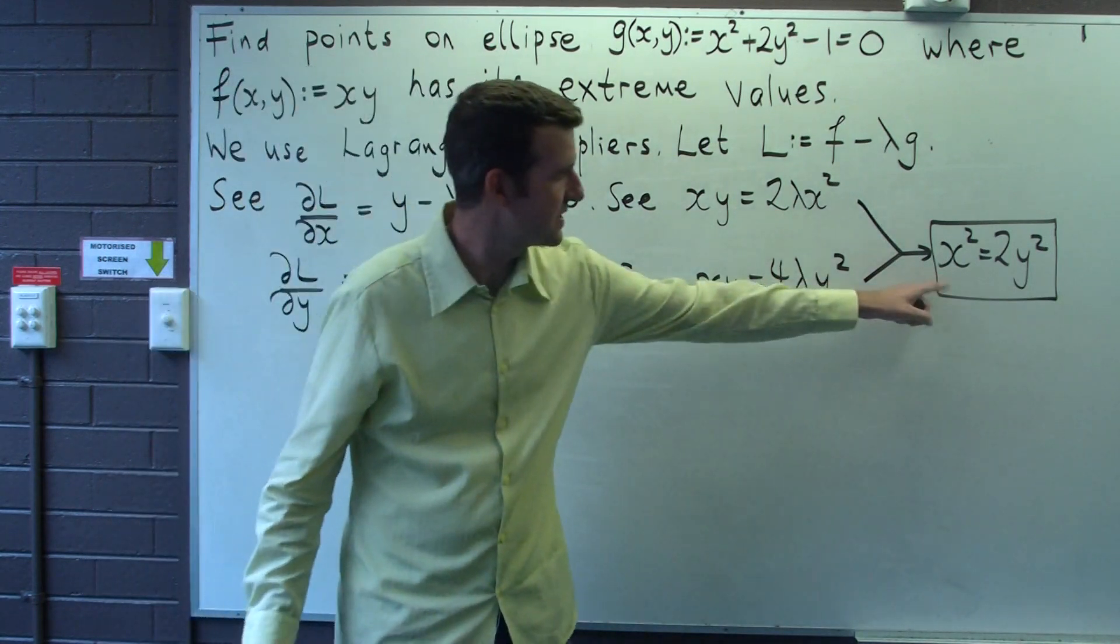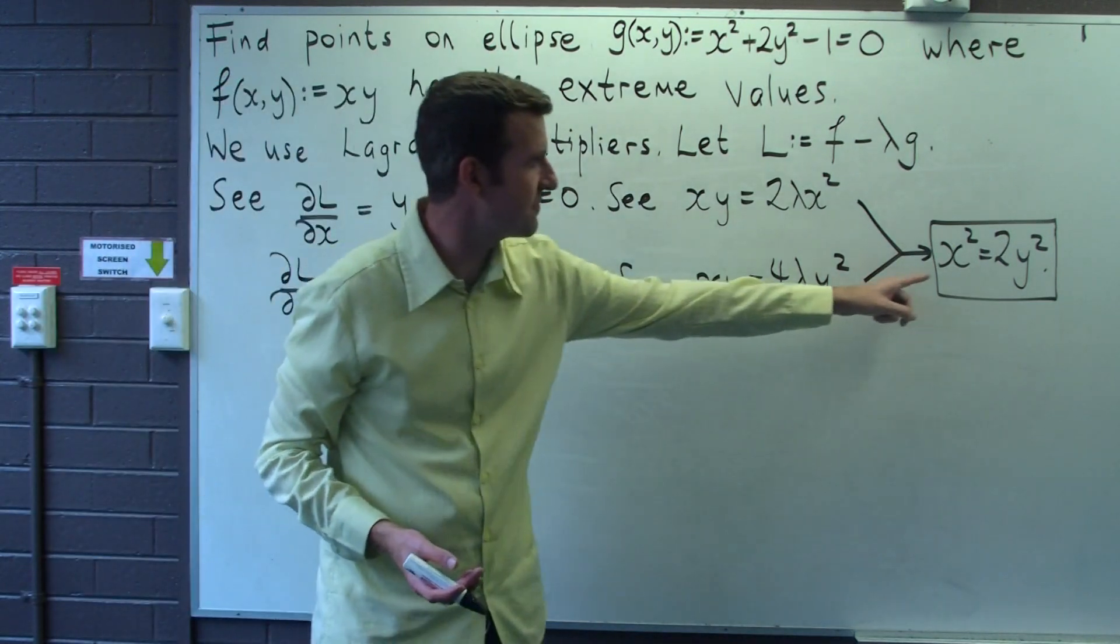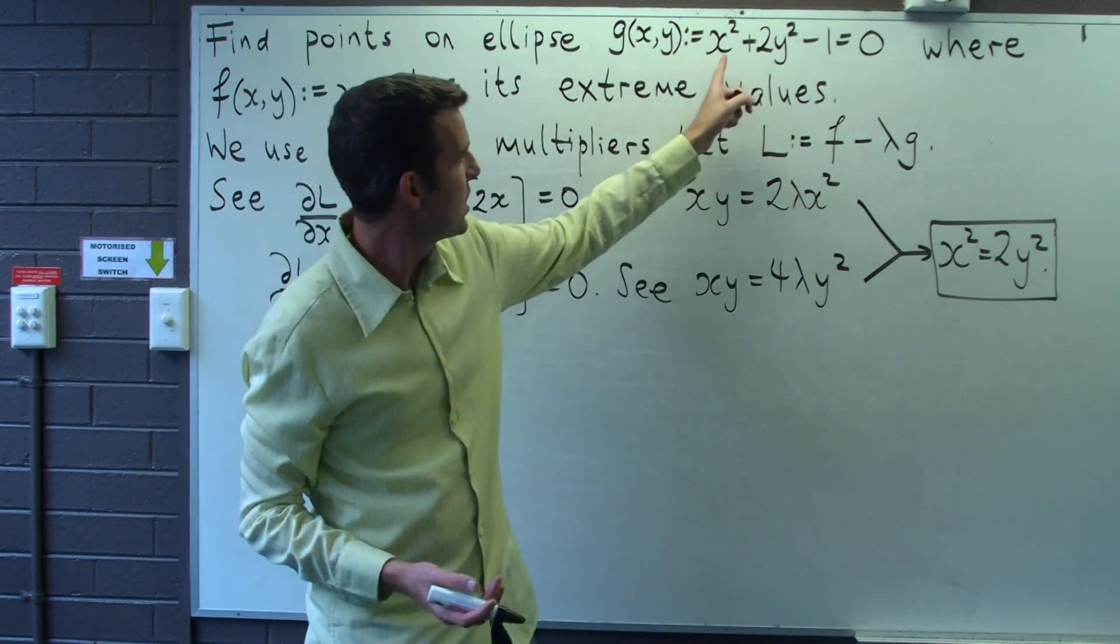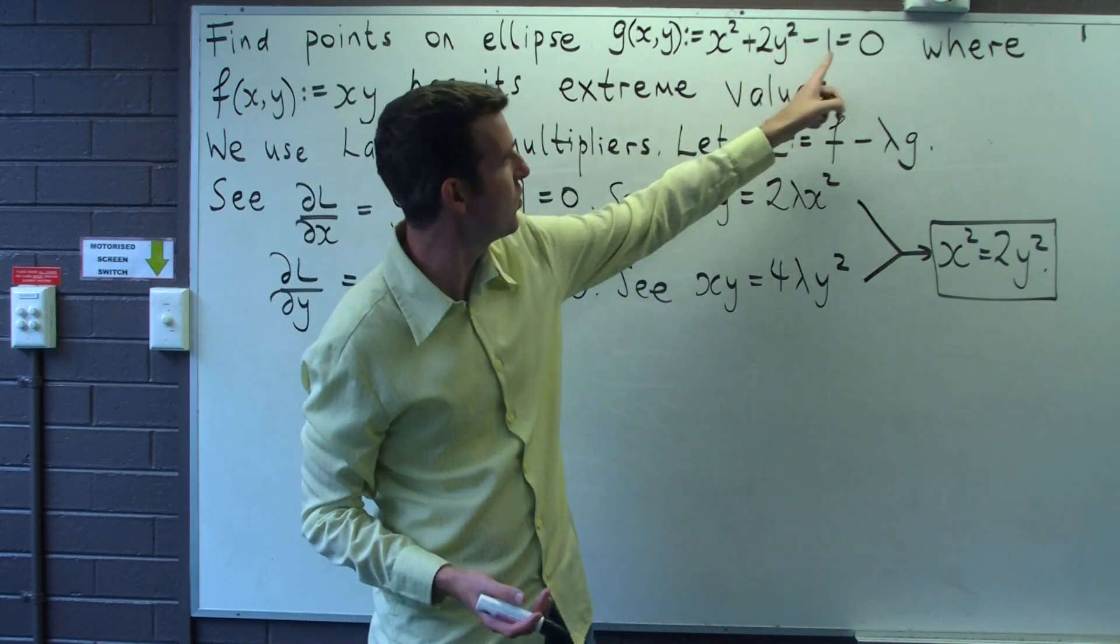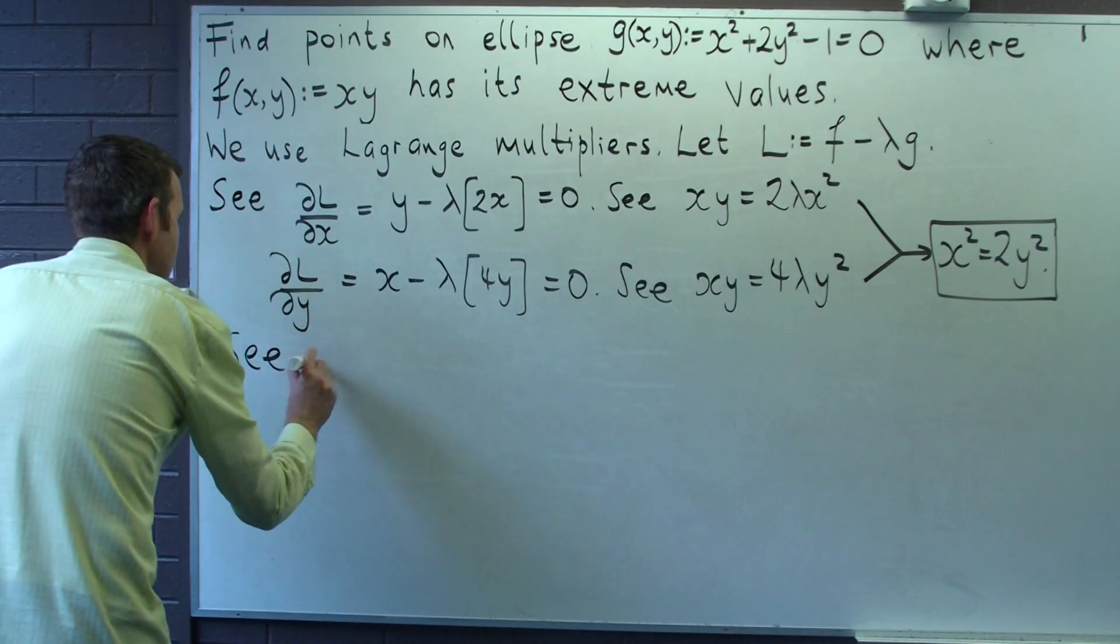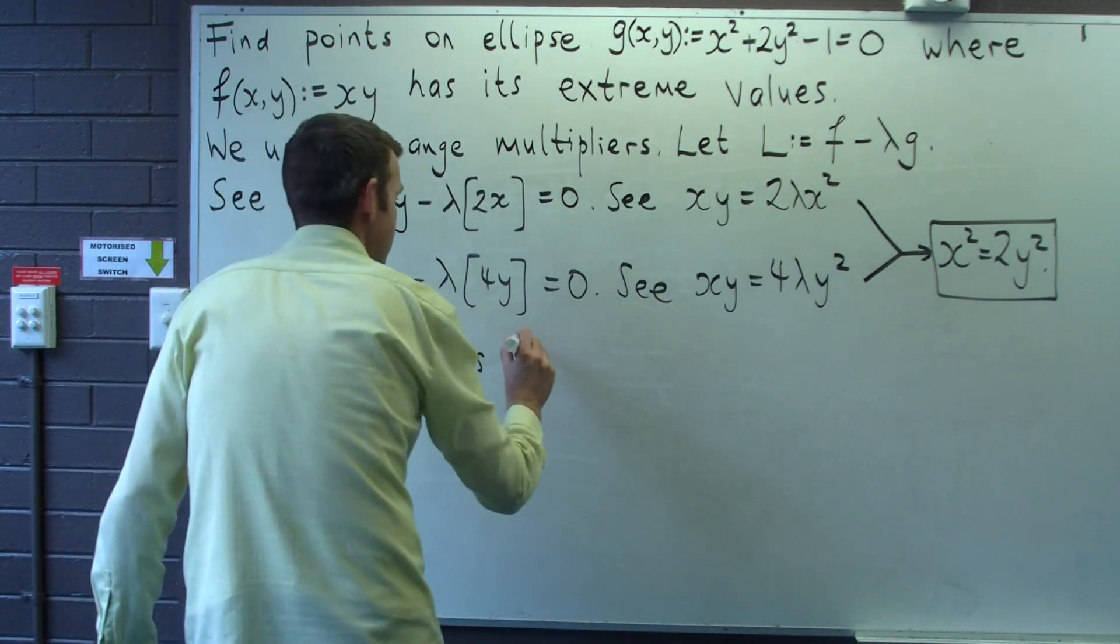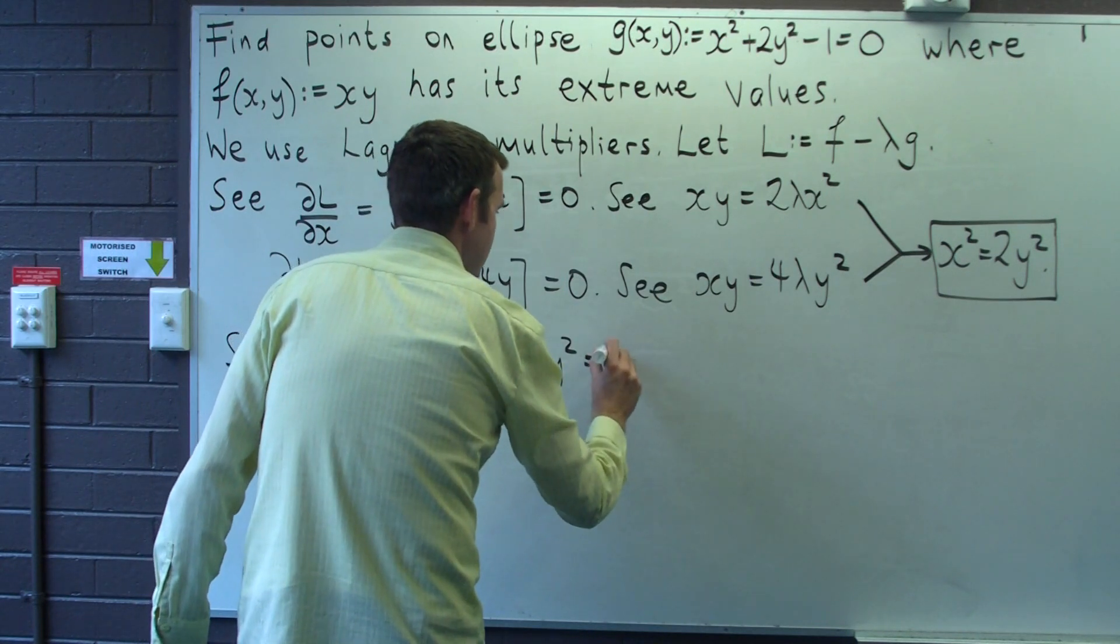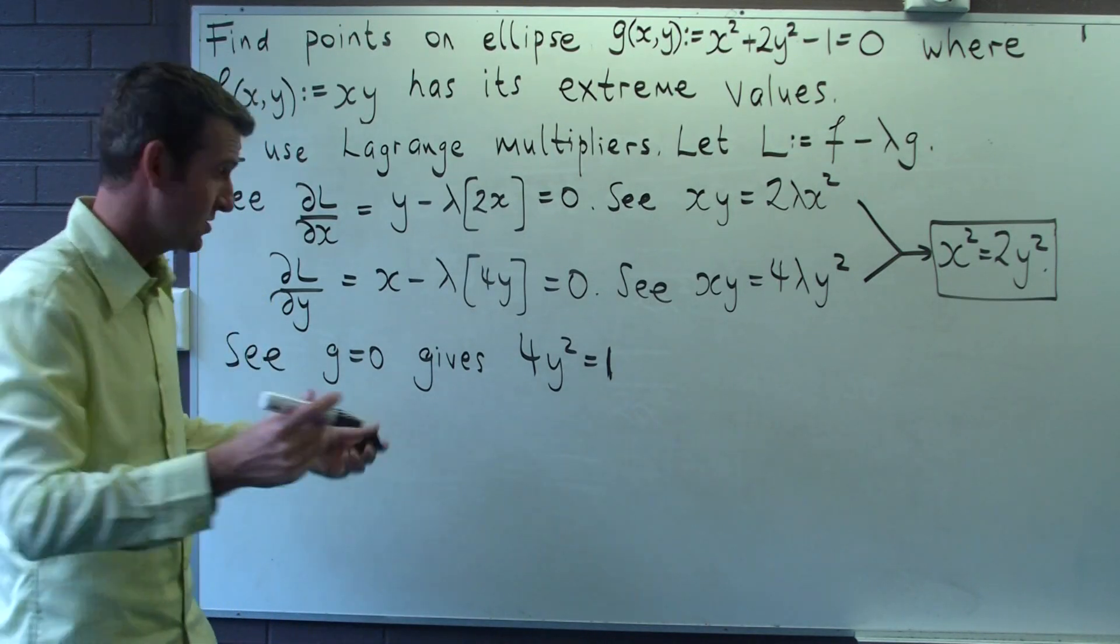Okay, so what we really want to determine here are specific points, so we have to go a bit further. Now what we're going to use is our constraint to help us solve for y. So I'm going to replace x squared with 2y squared. I'll get 4y squared equals 1, so y is going to equal plus or minus one half.